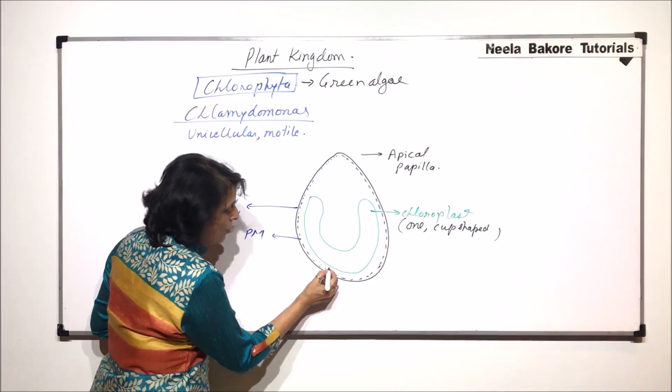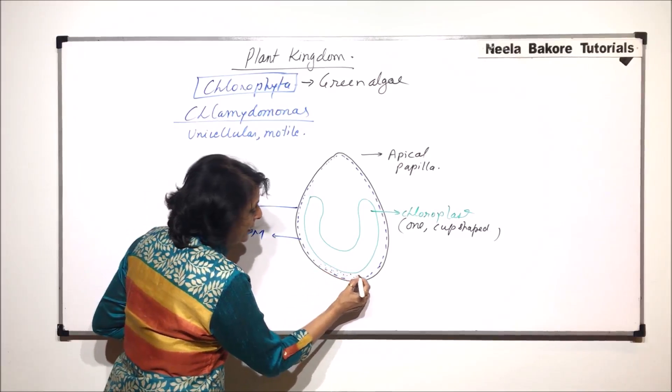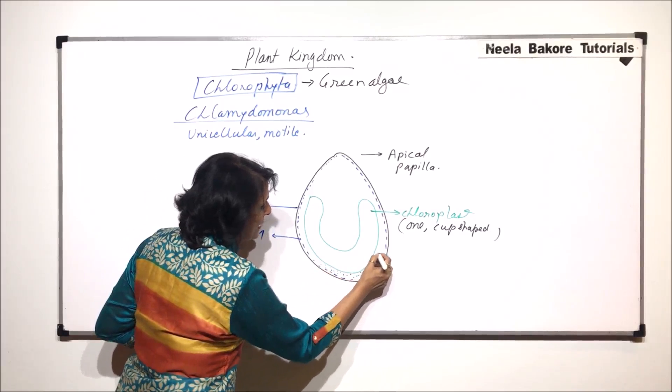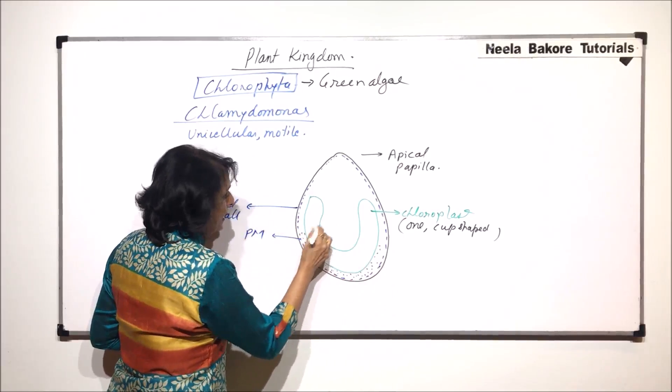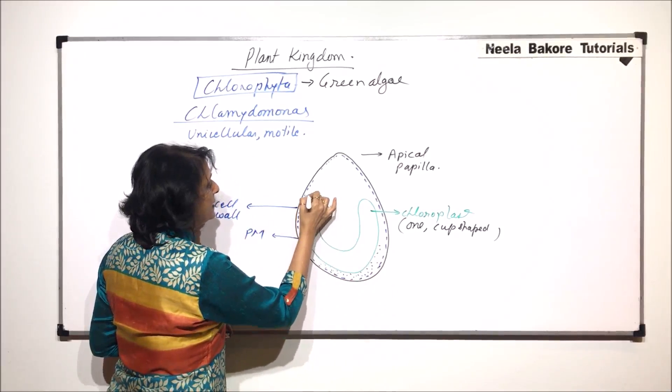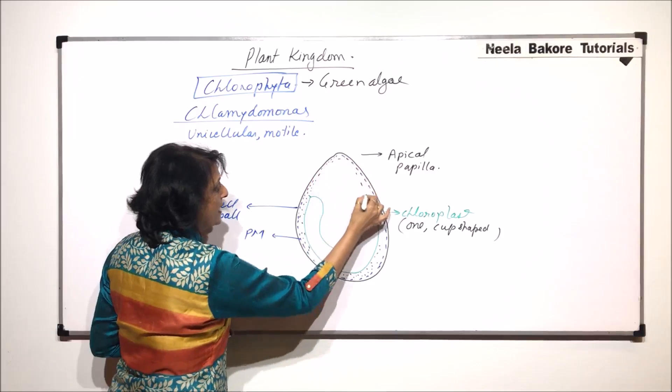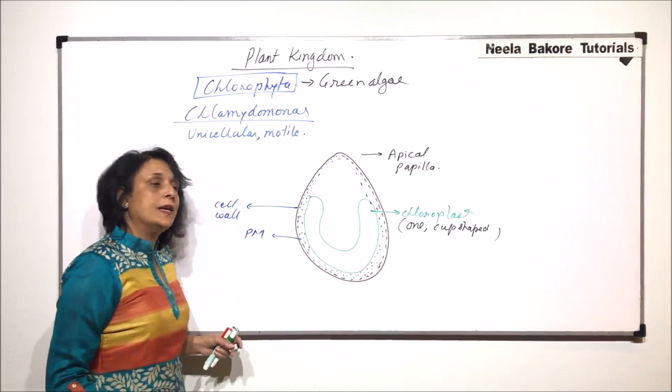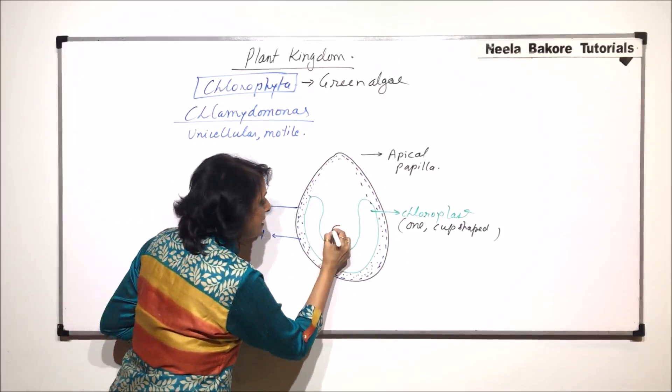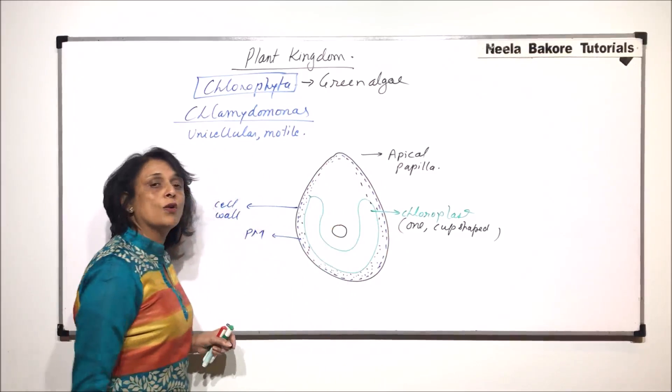In the outer part we would find the peripheral cytoplasm and in the middle part we will find the central cytoplasmic part. Nucleus is placed in this depression of this chloroplast.